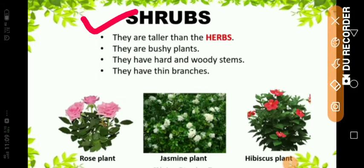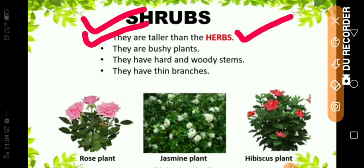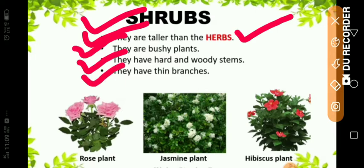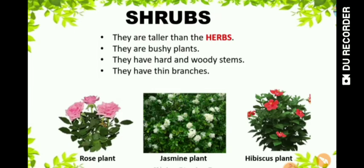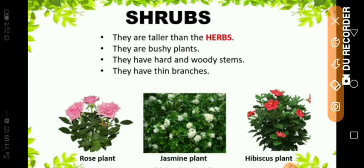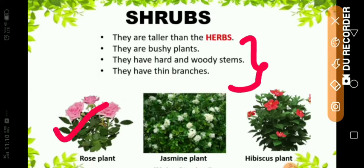The second type is shrubs. They are taller than herbs. They are bushy plants. They have hard and woody stems and thin branches. Shrubs are a little taller than herbs. Examples of shrubs: rose plant, jasmine plant and hibiscus.